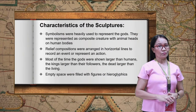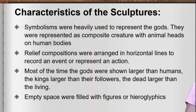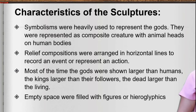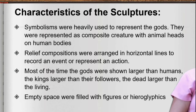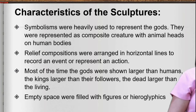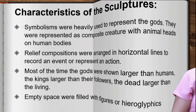Characteristics of Egyptian sculpture: First, symbolism was heavily used to represent the gods, who were depicted as composite creatures with animal heads on human bodies. Second, relief compositions were arranged in horizontal lines to narrate an event or represent an action. Third, the gods were shown larger than humans, kings larger than their followers, and the dead larger than the living. Fourth, empty spaces were filled with figures or hieroglyphics.